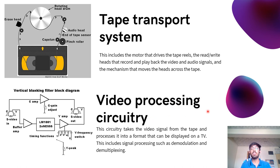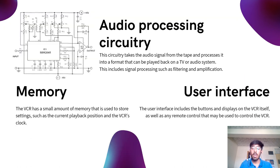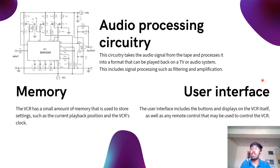The second is video processing circuitry. This circuitry takes the video signal from the tape and processes it into a format that can be displayed on a TV. This includes signal processing such as demodulation and demultiplexing. The third is audio processing circuitry. This circuitry takes the audio signal from the tape and processes it into a format that can be played back on a TV or audio system, including signal processing such as filtering and amplification.